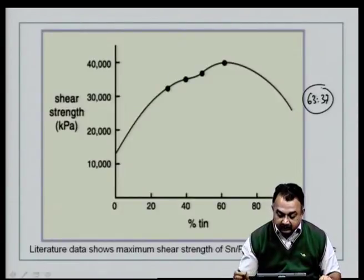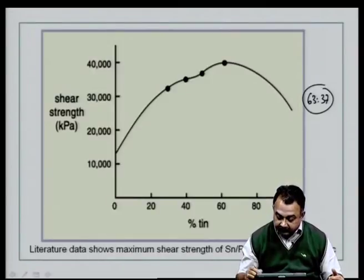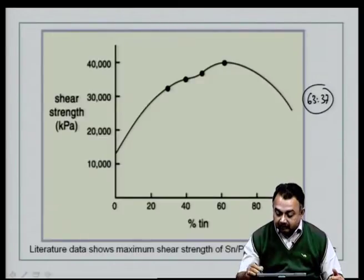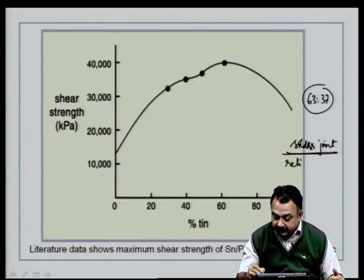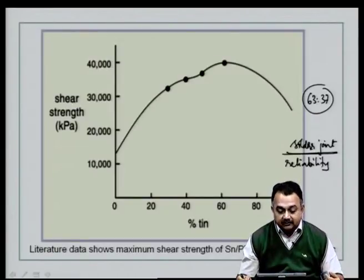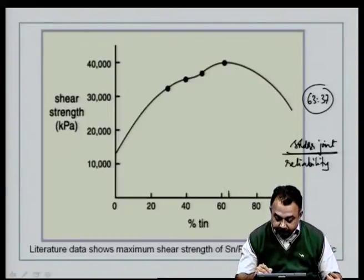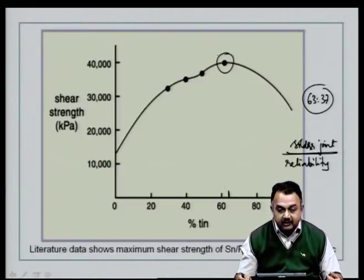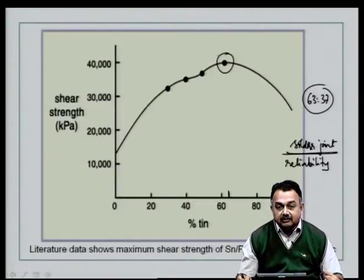Understanding the tin-lead phase diagram and why we choose 63-37 is important. Literature shows maximum shear strength of tin-lead alloy at the 63-37 eutectic. When talking about a solder joint using tin-lead alloy, we are concerned about solder joint reliability — we need a joint that can withstand various thermal cycles when the board is powered up and subjected to extreme conditions of operation. At 63-37, the shear strength is at its maximum, giving the most favorable condition for solder joint formation.